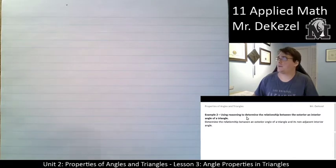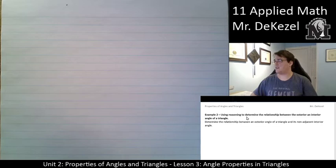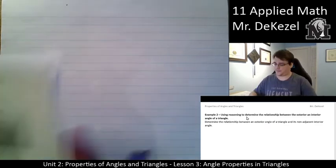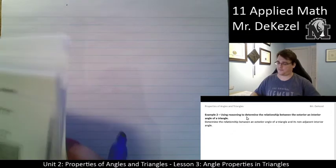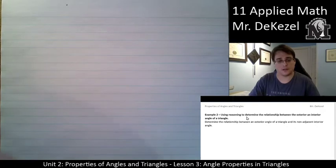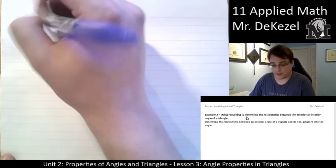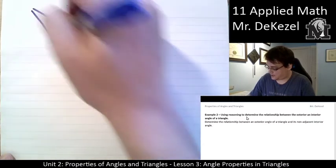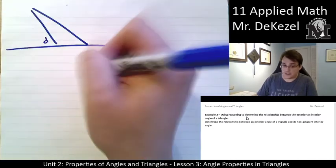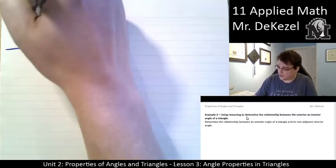So I think we have two more examples, and then we are unleashing you onto the practice problems. So example two. Use reasoning to determine the relationship between the exterior and interior angle of a triangle. So let's set up a triangle that looks a little bit different this time. We're going to do a triangle that looks like this and a line there. And I'm going to label this angle D, C, angle B, angle A.